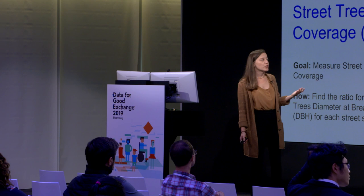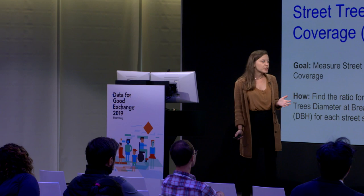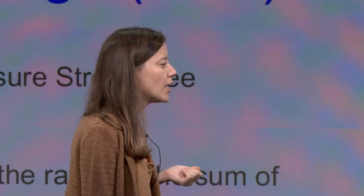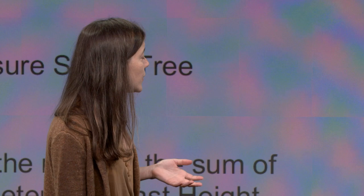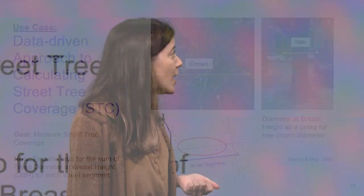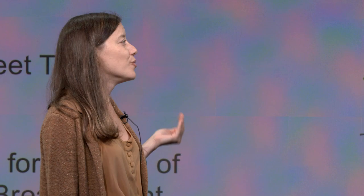Luckily, big data can solve this problem. Ideally we would measure the crown diameter of each tree to understand coverage, however this data is not immediately available. I use the NYC street tree census data — an extremely comprehensive account of every tree in New York City. One interesting variable in the data is the diameter at breast height, or DBH, which is a very common way to measure trees. There is substantial research backing the statistical association between DBH and crown diameter — meaning the wider the trunk diameter, the wider the crown diameter is expected to be. For this reason, I chose to use DBH as an approximation of crown diameter.